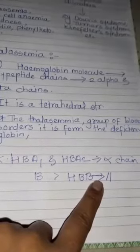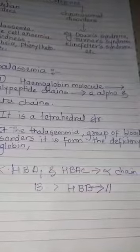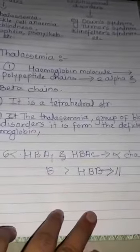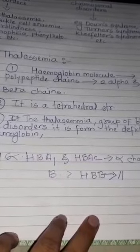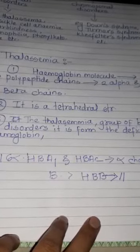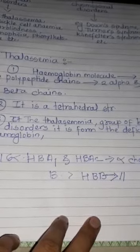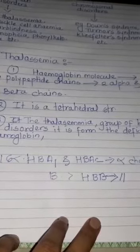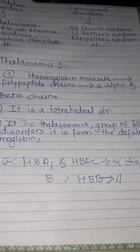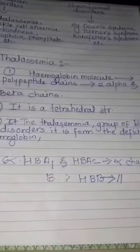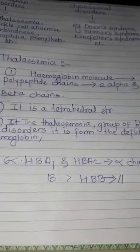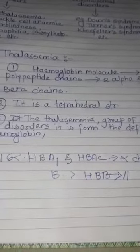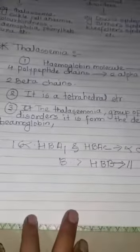Thalassemia is caused due to deletion or mutation of the genes which code for the alpha or beta globin chains. This results in abnormal synthesis of hemoglobin. Depending on the severity, a person with thalassemia will show various symptoms.